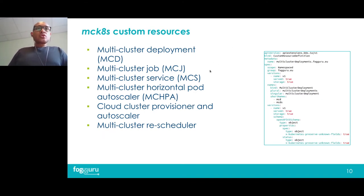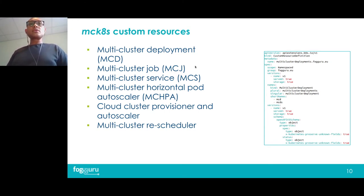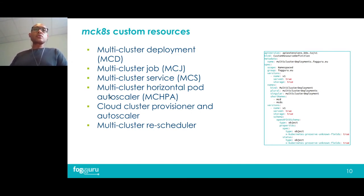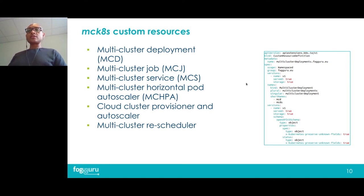In MCKETES we have also introduced new custom resources. Some are similar to those in Kubernetes Federation — for example, multi-cluster deployment is similar to federated deployment, multi-cluster jobs to federated jobs, and multi-cluster service to federated services. We have also introduced new ones such as multi-cluster horizontal pod autoscaler, cloud cluster provisioner, and multi-cluster rescheduler. On the right you can see a definition of the multi-cluster deployments custom resource.